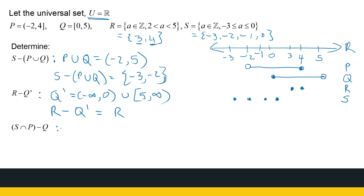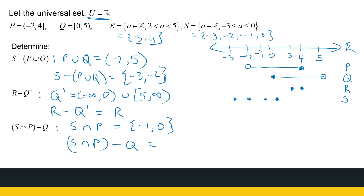Next: S intersection P, without Q. First find S intersection P. P is an interval, S is just discrete points. Minus 3 and minus 2 are not in P. Minus 1 and 0 are in both, so S intersection P is {minus 1, 0}. Now take Q away from that. Q doesn't have minus 1, but Q has 0, so I take 0 out. I'm left with just minus 1.